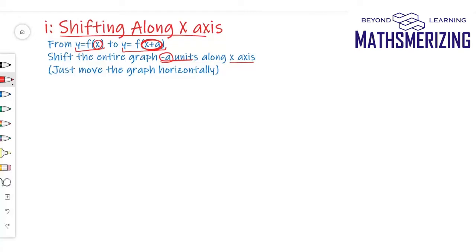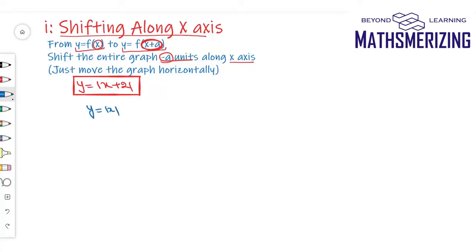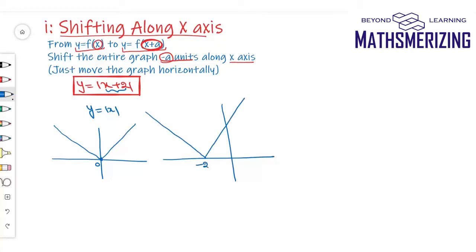For example, suppose I have to draw the graph of y equals mod of (x+2). The basic graph here is y equals mod of x. For mod of (x+2), I'll shift the entire graph minus 2 units along the x-axis. So that's the graph of y equals mod of (x+2).